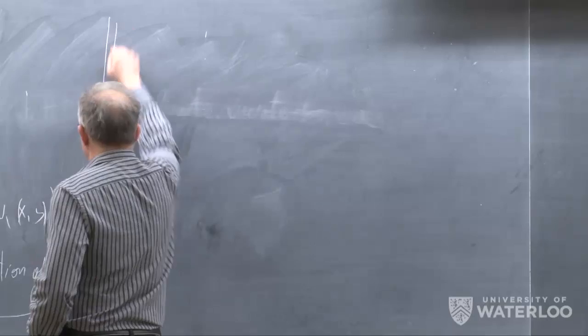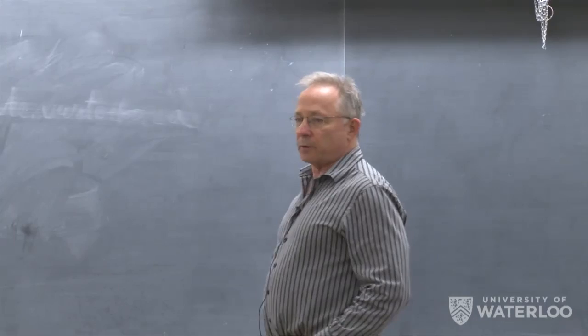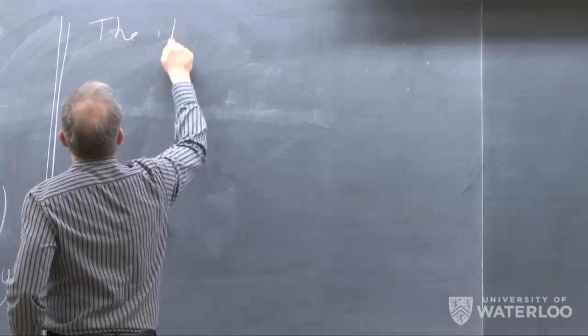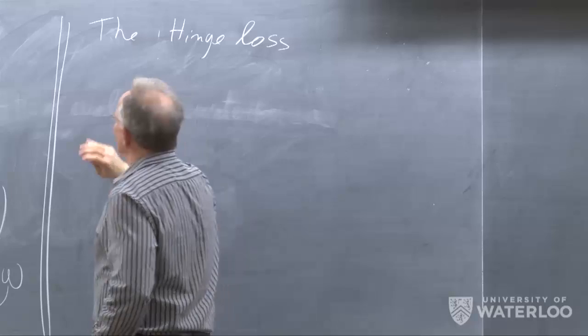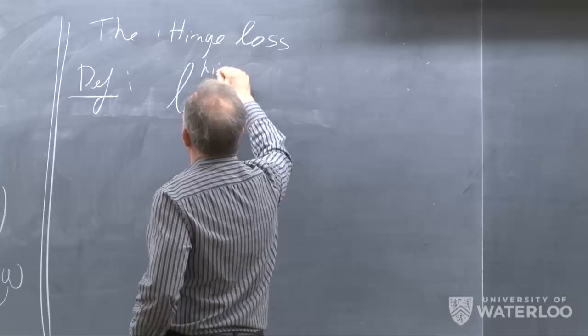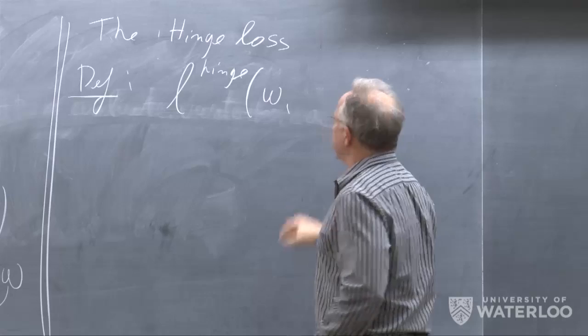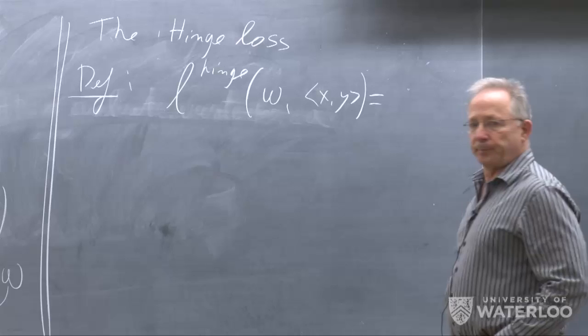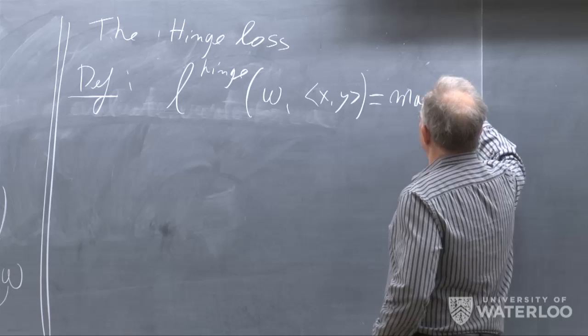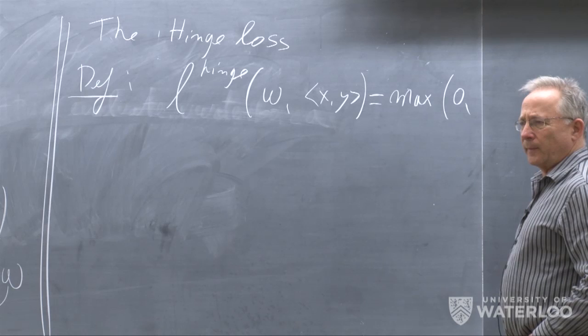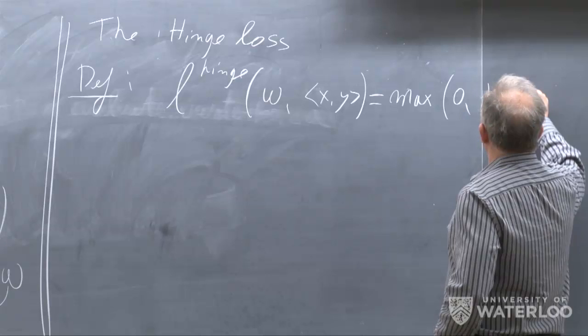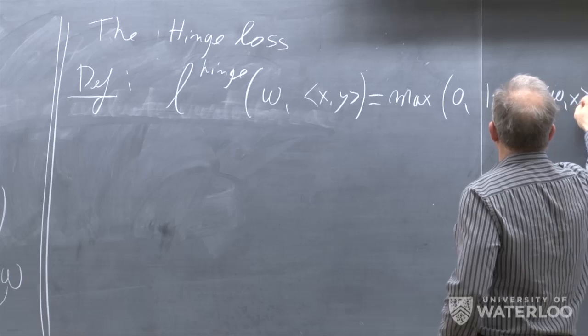The only surrogate loss that we will discuss — in the literature people use several types, but the most common one — is called the hinge loss. The definition is that the hinge loss of a vector W on the point X, Y is defined as the maximum between 0 and 1 minus Y times the inner product of X and W.